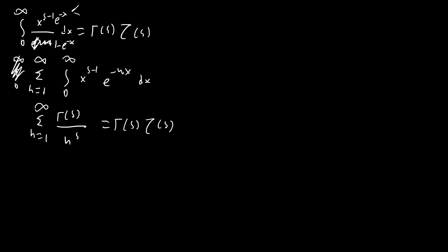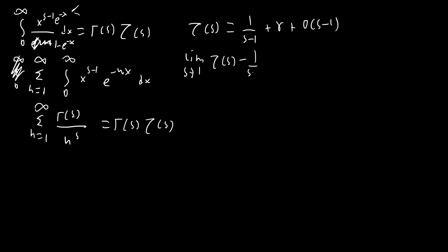Another identity I'll be using — I won't prove it since I don't want to make this video too long, and it's pretty difficult — is a well-known property of the zeta function: ζ(s) equals 1/(s-1) + γ plus higher-order terms. The important part is that the limit as s → 1 of ζ(s) - 1/(s-1) equals γ, which you can see directly from the Laurent series. This is something we'll use when evaluating the integral.